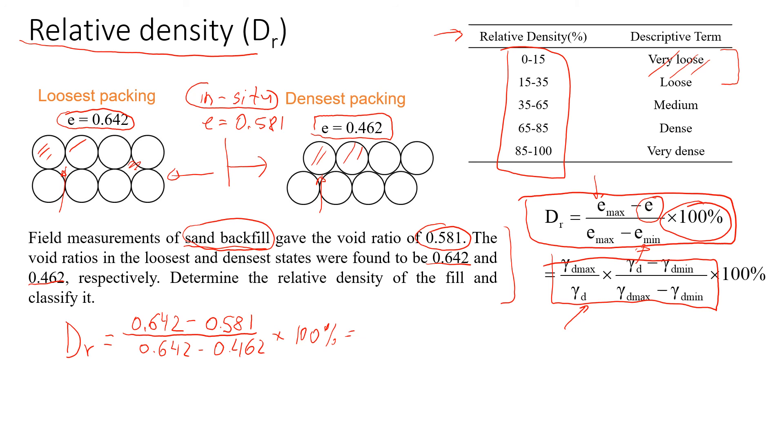That will give us about 33.9%. Now, let's look at the table and see where this number is. It's 33.9%, so we define this as a loose material.